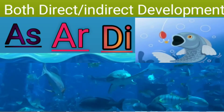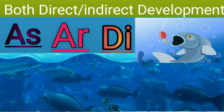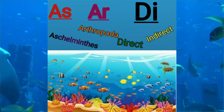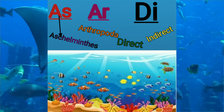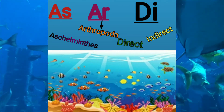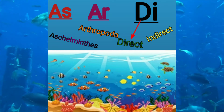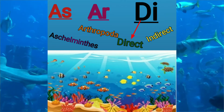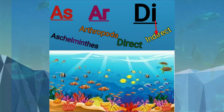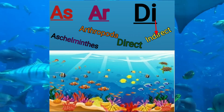Both indirect and direct development are shown here. The element is rc arthropoda. DC is Direct and RC is Indirect. This Direct-Indirect will not be developed.